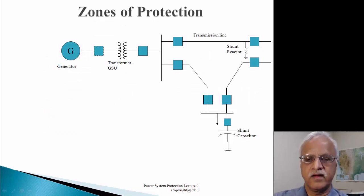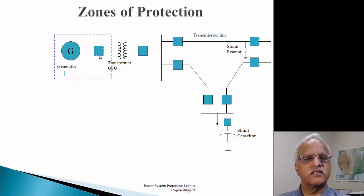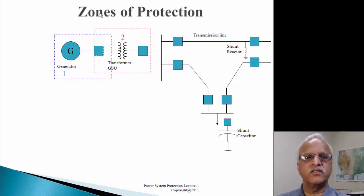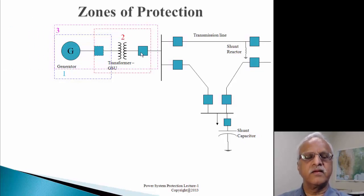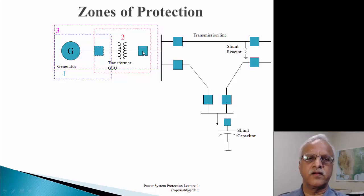Looking at a protection scheme: if there is a fault in the generator, we need to open only one particular breaker that isolates the generator. Similarly, if we have a fault in the transformer, we have to open two breakers - one on the low side and one on the high side. If protection covers both generator and transformer, we trip the high side breaker of the transformer, and if we have a low side breaker, we can trip that too.